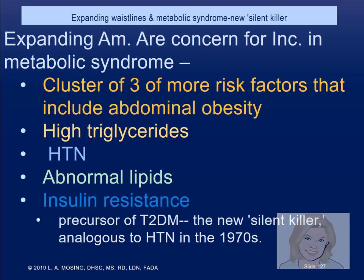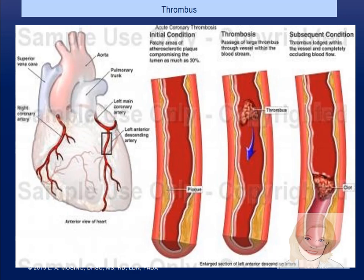Metabolic syndrome is a silent killer — a cluster of three or more of the following: high triglycerides, hypertension, abnormal lipids, or insulin resistance, along with waist greater than 40 inches in a man. All of these are risk factors putting patients at higher risk for heart disease and thrombosis.